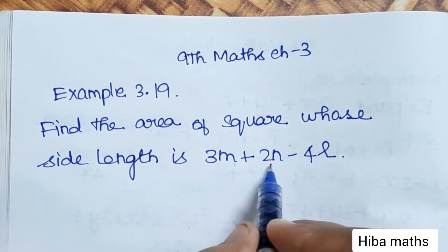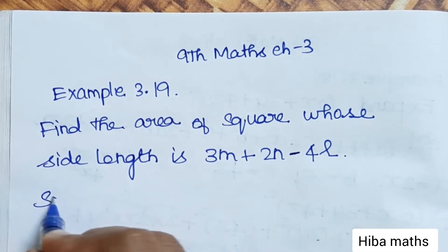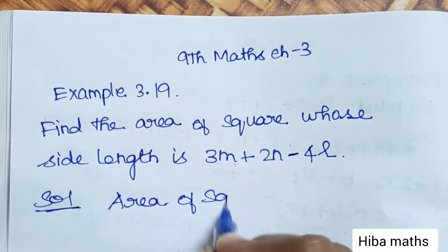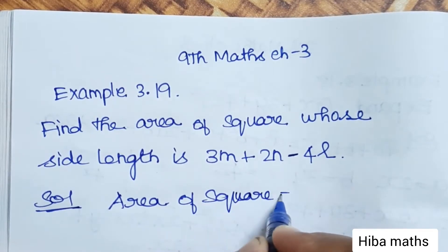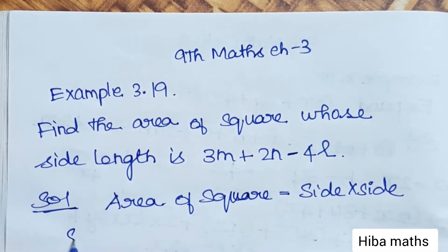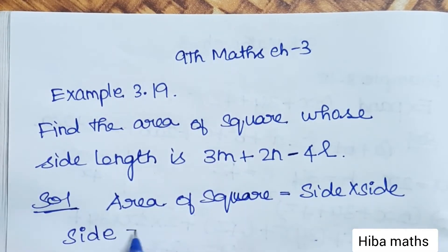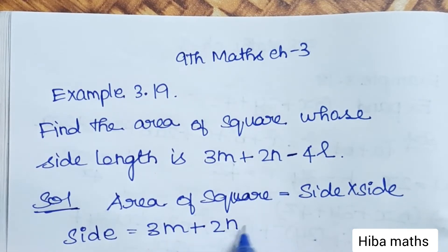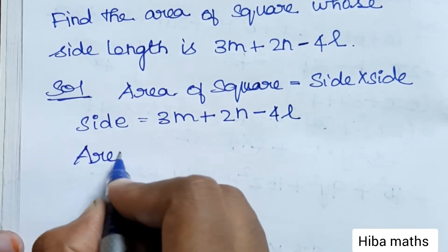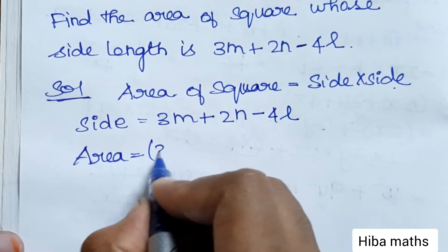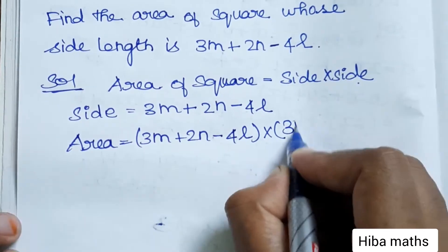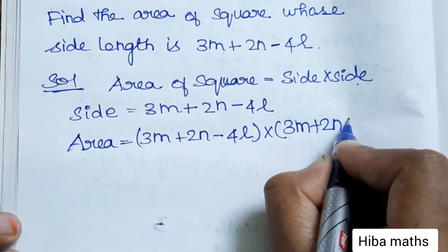...3m plus 2n minus 4l. So area of a square is equal to side into side. Side length is 3m plus 2n minus 4l. Area is equal to side into side: (3m + 2n − 4l) into (3m + 2n − 4l).